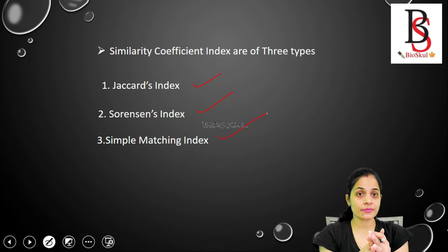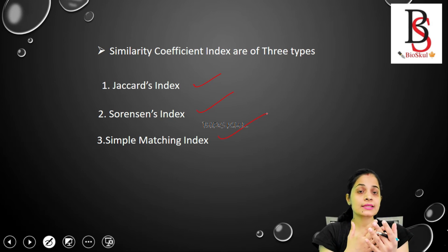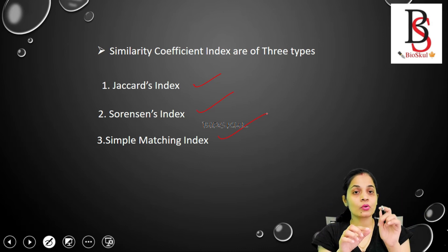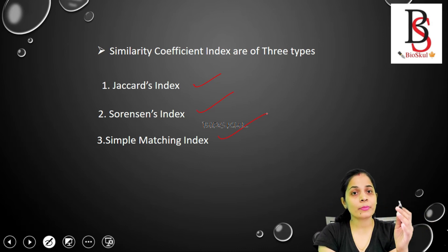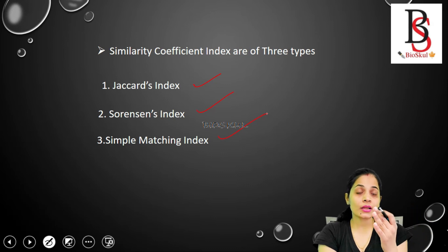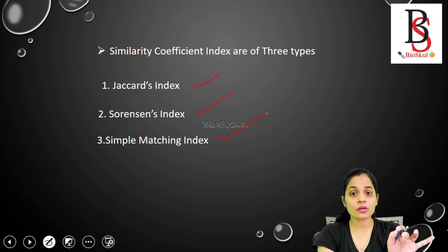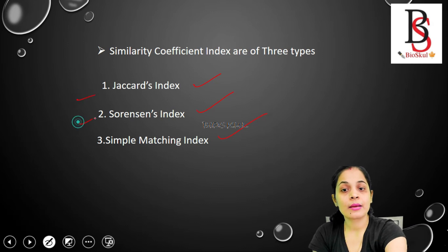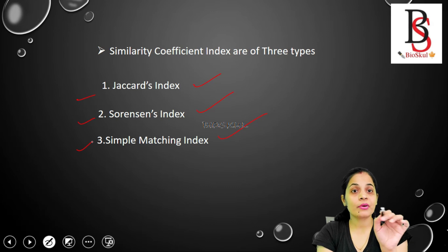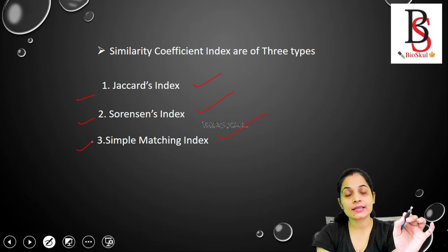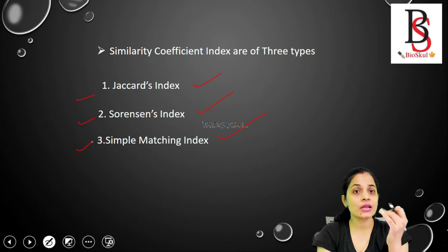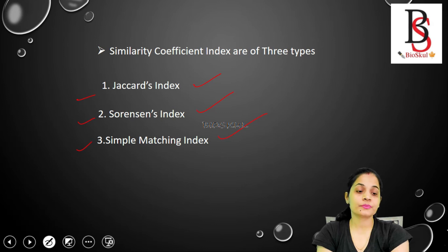This topic is very simple and important for examinations like CSIR NET. You will get a table showing the presence or absence of species in two or more communities, and the question will ask you to calculate the similarity between them. If asked generally, you can use any of these three indexes, but if the question specifies Jaccard's, Sorenson's, or Simple Matching index, use that particular formula.